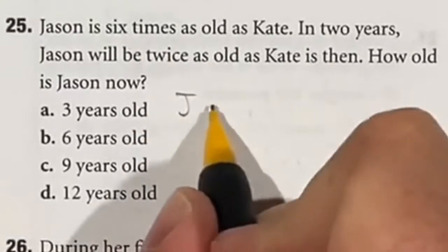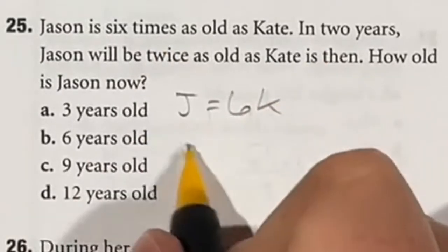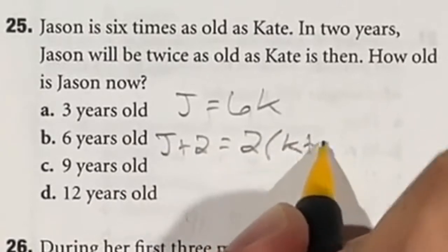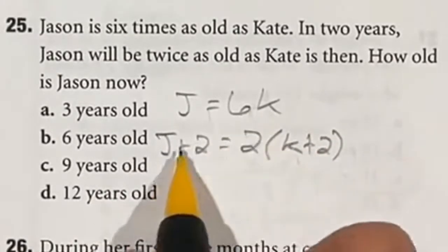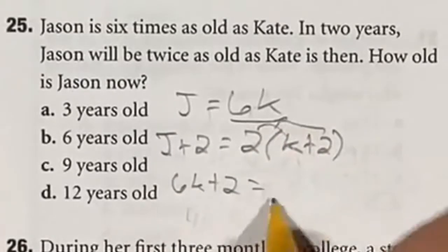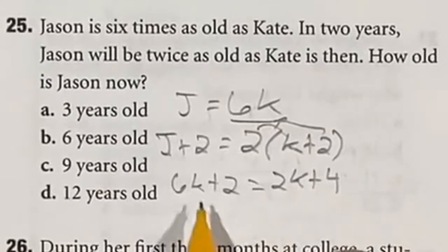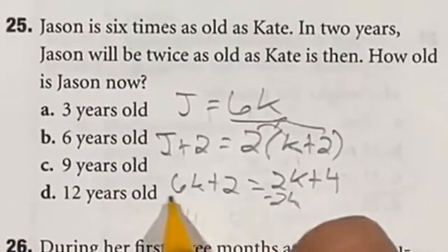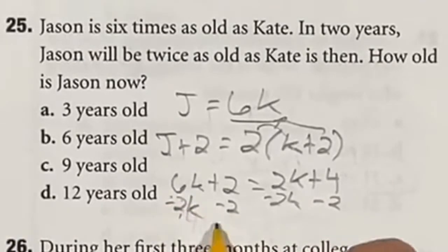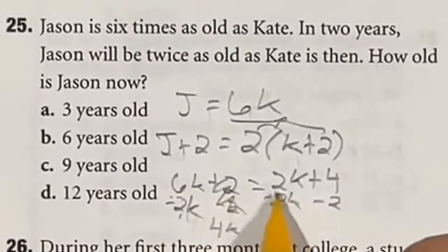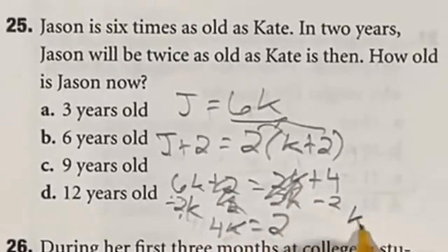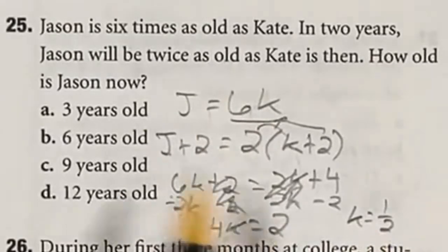For question 25, Jason is equal to 6 times the age of Kate, and in 2 years Jason's age plus 2 equals twice Kate's age, but Kate is also 2 years older at that point. This is a system of equations, so let's solve by substitution. Take 6k and plug it in for J: 6k plus 2 equals 2k plus 4. Subtracting 2k from both sides and subtracting 2 from both sides gives 4k equals 2. Dividing both sides by 4, k equals one half. Jason is 6 times that, so one half times 6 is 3. Answer A.